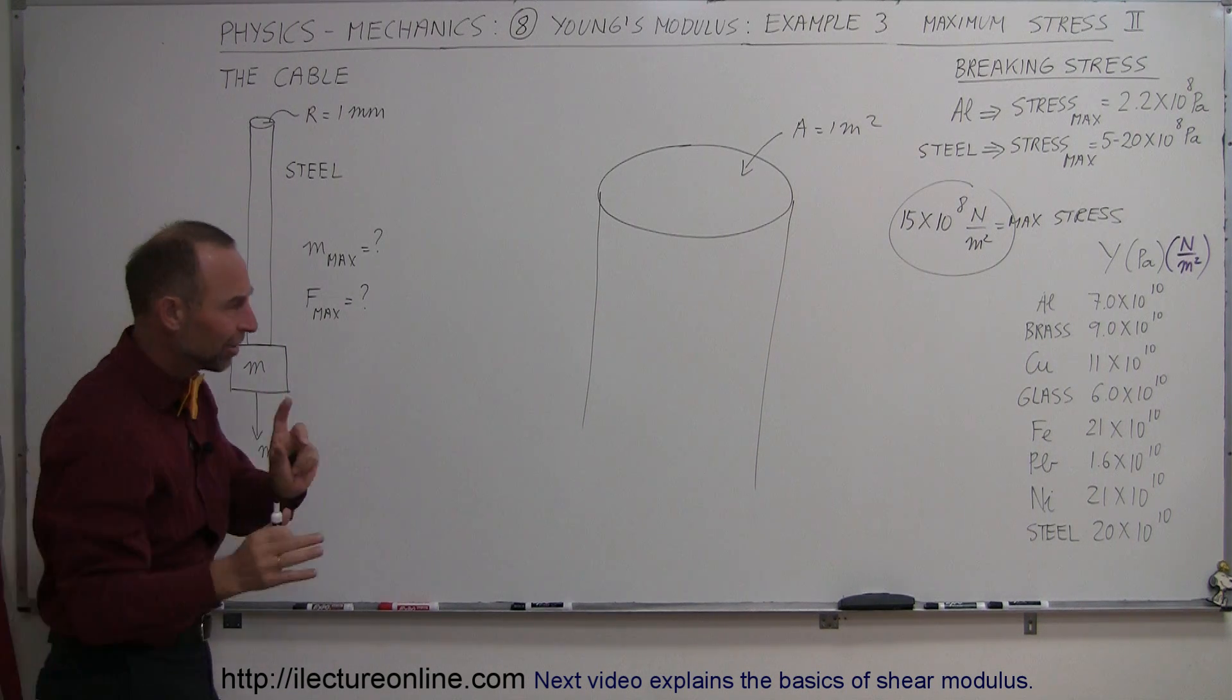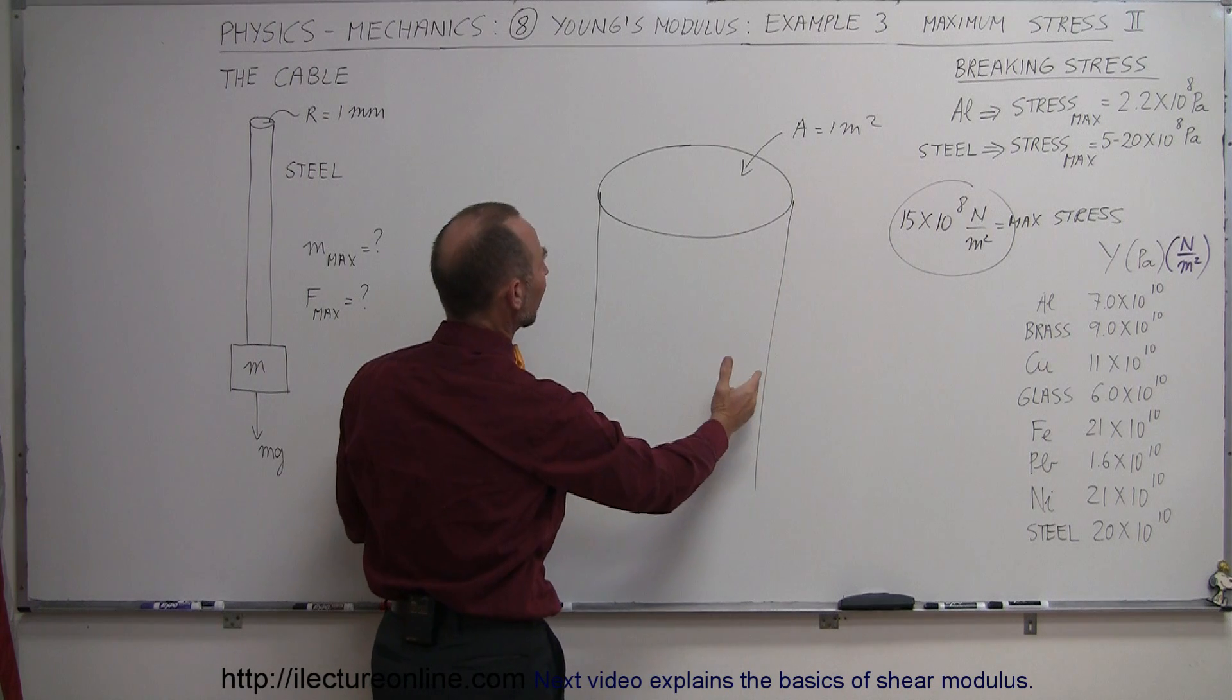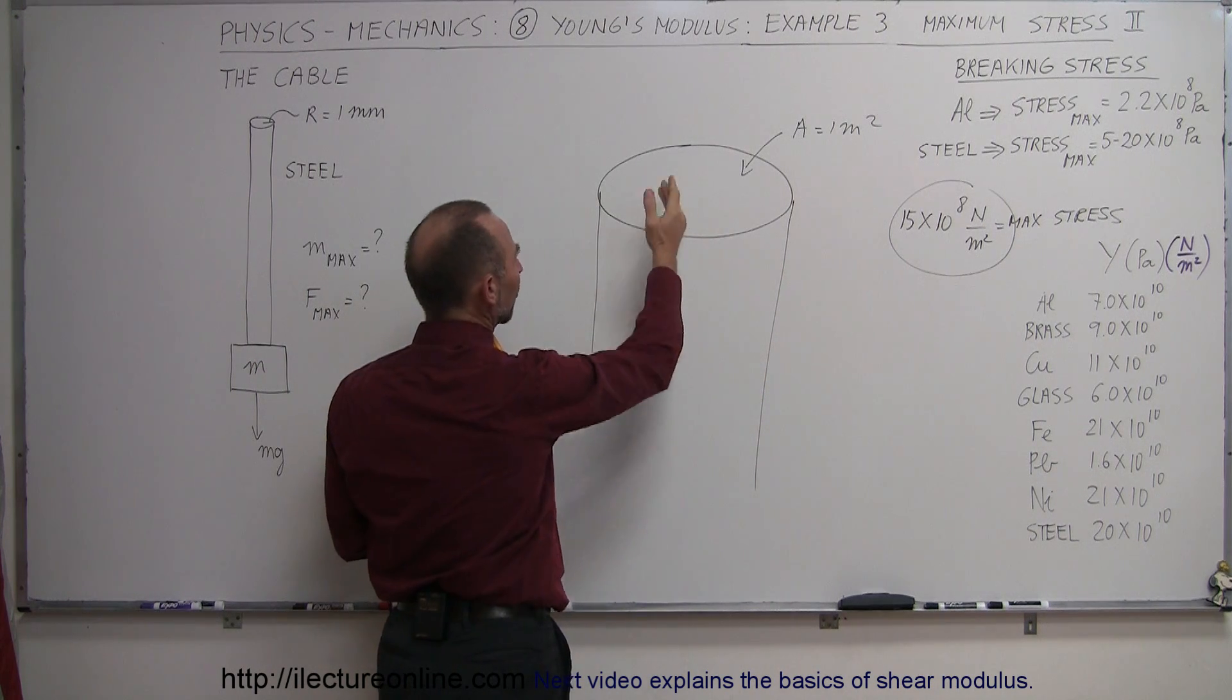We can work with them a lot easier, and they give us an equivalent amount of strength if we put enough of them together. But let's say for a moment that we had a big cable like this that had a cross-sectional area of 1 square meter.